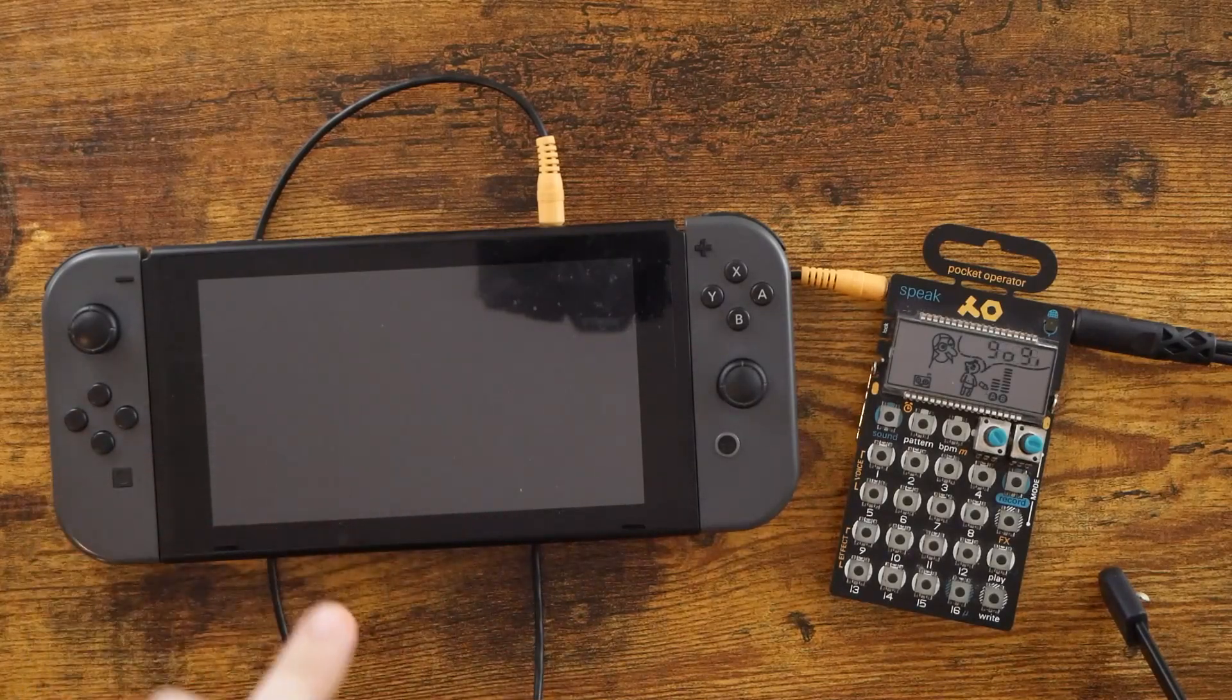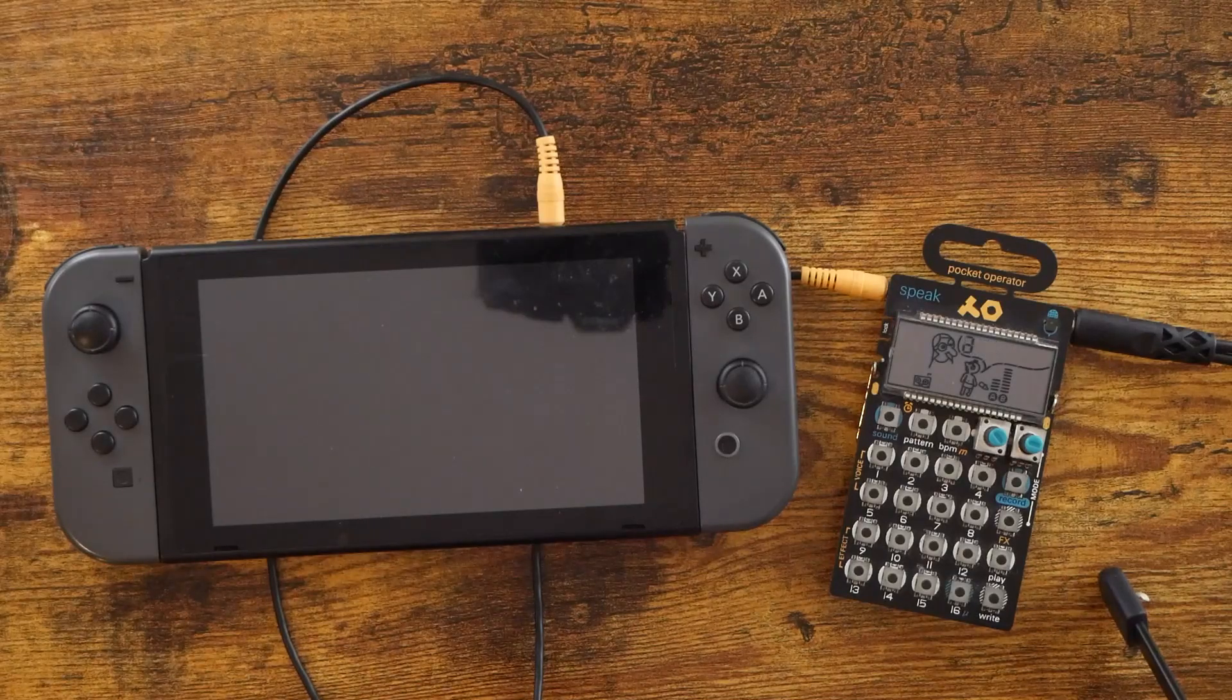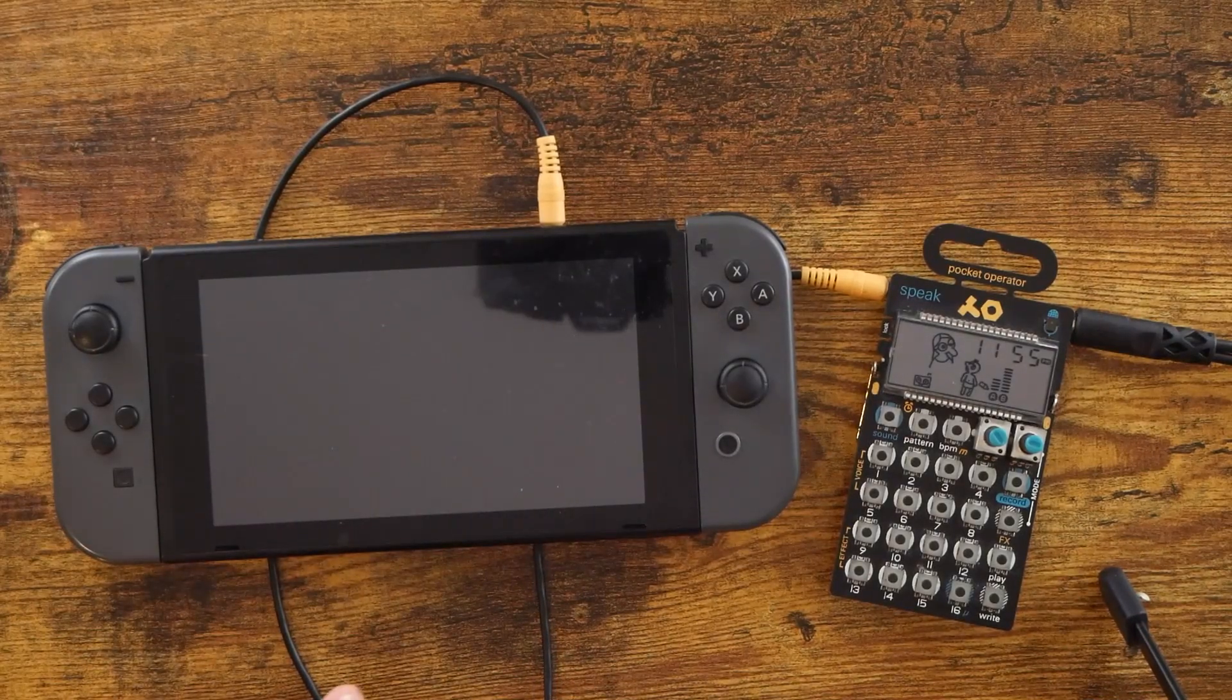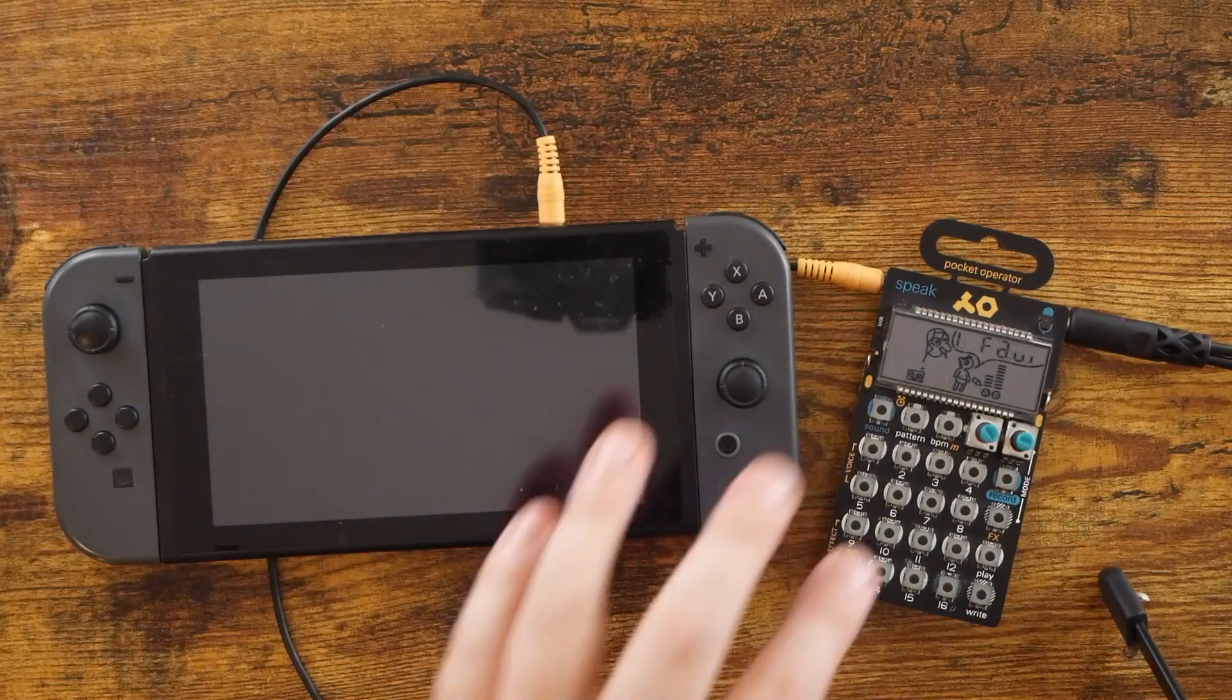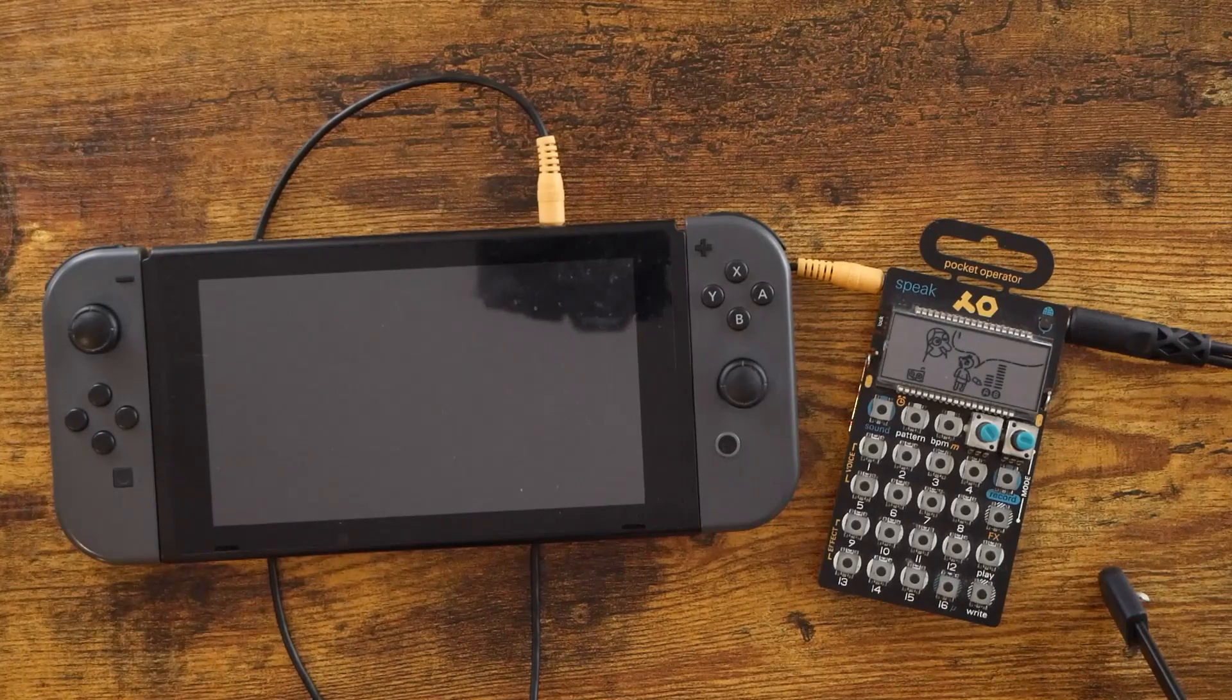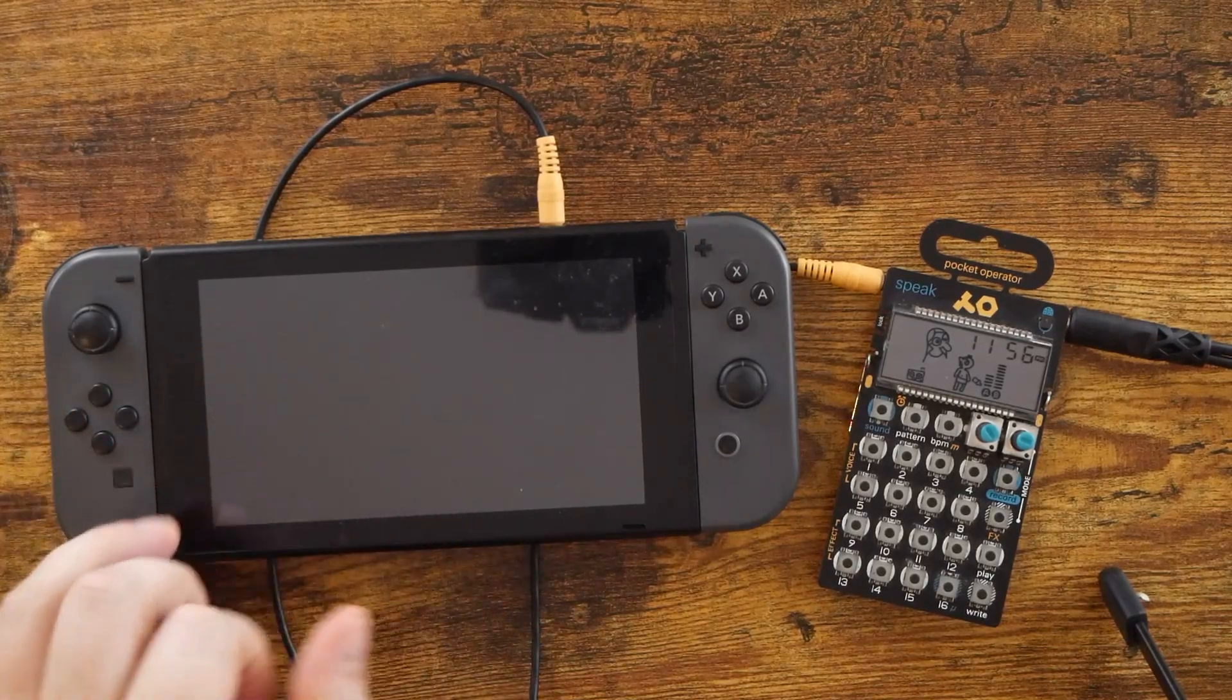When Animal Crossing New Horizons first came out on the Nintendo Switch, I sampled it into the PO-33 and we made a miniature little track with it. That was almost two years ago now. Well, Animal Crossing New Horizons just got a huge update today, and while I haven't explored any of the update features, I realized that I have a new pocket operator with sampling capabilities since filming that original video - the PO-35 Speak. So let's go ahead and record something. Now I'm going to show as little of the game and as little of the audio as possible to not get hit with that copyright.